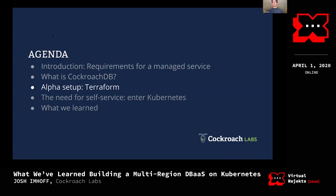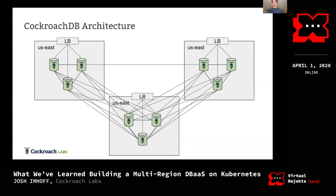We didn't always use Kubernetes. Before Kubernetes, the simple production setup was to use Terraform to spin up VMs, then run some Go code to load the CockroachDB binary onto each VM, and keep it running with Supervisor. This was a very simple approach.